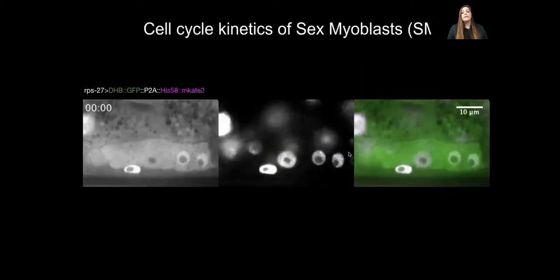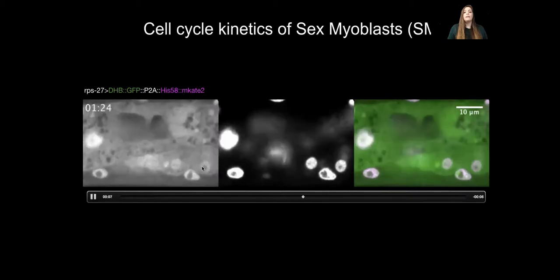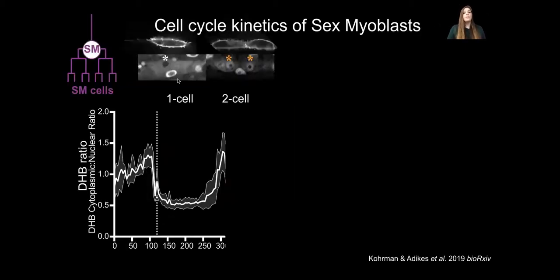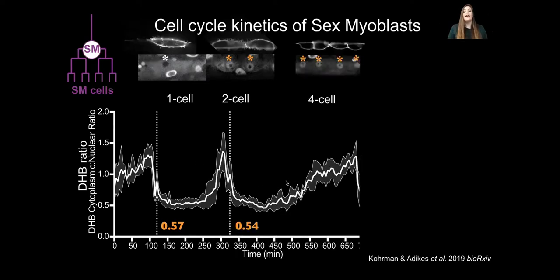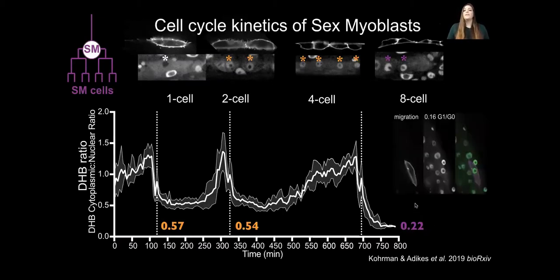We followed these cells through subsequent rounds of division. One SM cell divides to two — currently in S phase, proceeding through G2, M — then giving rise to two daughters going into G1. Compiling multiple traces across many animals, we watch the cell divide from one to two, go to a CDK-increasing state before dividing again, and upon terminal differentiation it exits to CDK-low with a DHB ratio of 0.22. This is exciting because migration occurs at a DHB value of about 0.16, suggesting the cell is in G0 when migrating — even lower than its terminally differentiated G0.